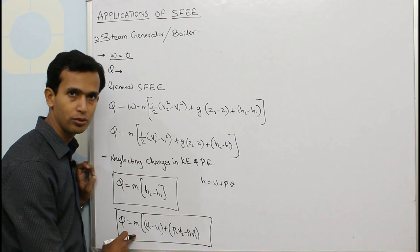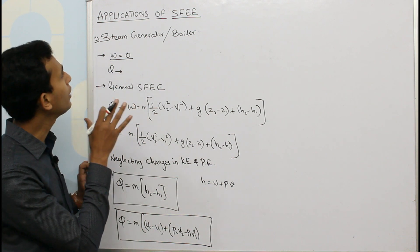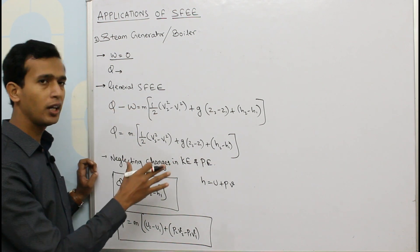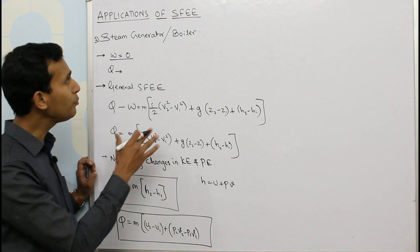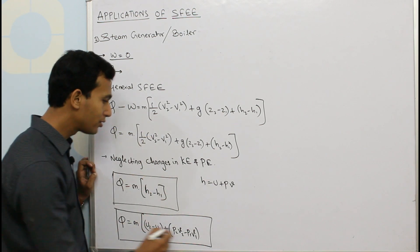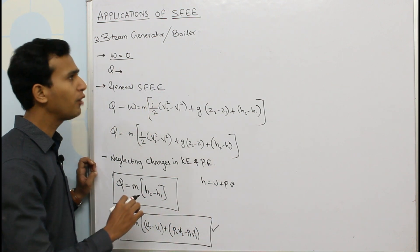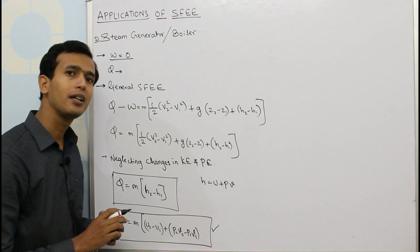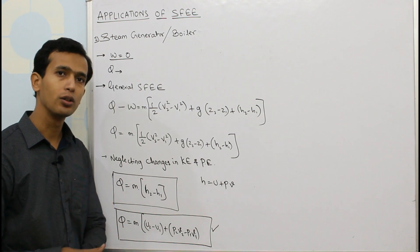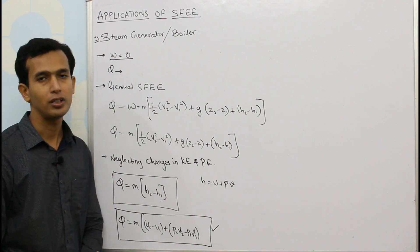So this was all about the application of steady flow energy equation to a steam generator, and this is the particular equation for steam generator or boiler. Hope you have enjoyed this video. Please like, subscribe and share the videos of our channel, and thank you for watching this video.